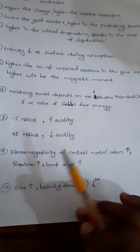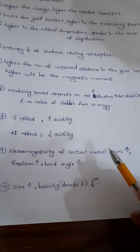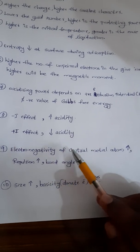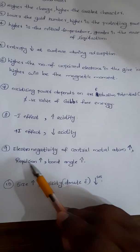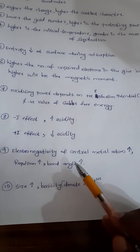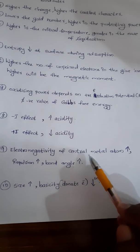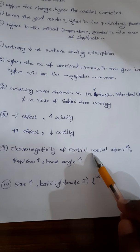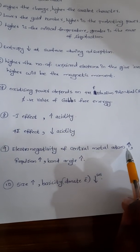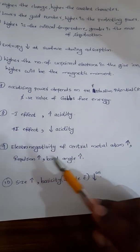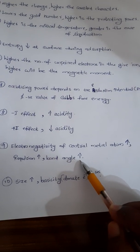Next point: if the electronegativity of the central metal atom increases, then repulsion will increase and bond angle will also increase. So higher electronegativity of the central atom leads to greater repulsion and a larger bond angle.